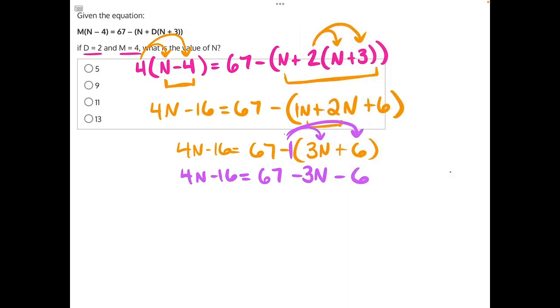Actually, we have two more like terms that we can combine, so we can do that quickly. 67 minus 6 will give us 61 minus 3n, and now we can start to do opposite operations, starting with negative 3n. This 3n is being subtracted, so the opposite operation is to add 3n to both sides. These 3n's will cancel, giving us 7n minus 16 is equal to 61.